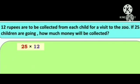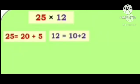To find out, we have to multiply 25 by 12. Let's split the numbers like this: 25 is equal to 20 plus 5 and 12 is equal to 10 plus 2.